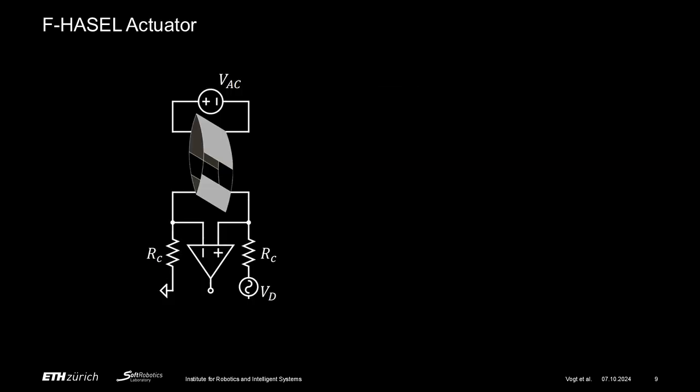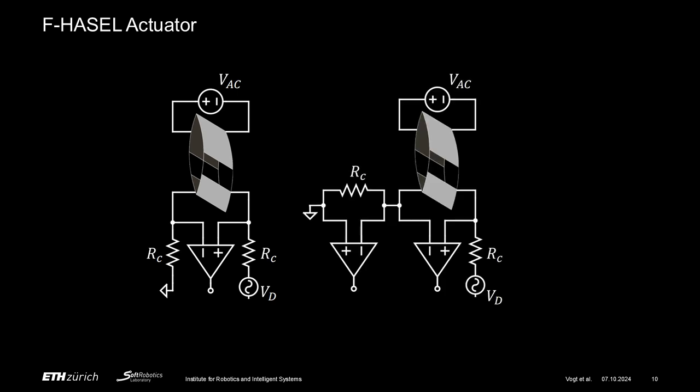One major benefit this design offers is that in our case, the sensing electrodes are at a low-voltage level. This allows us to take a direct measurement of the voltage drop of the sensing signal over the sensing electrodes with low-voltage off-the-shelf components. Furthermore, we can implement a low-side current sensor by placing a resistor in series with the sensing electrodes and measuring the voltage drop over that resistor.